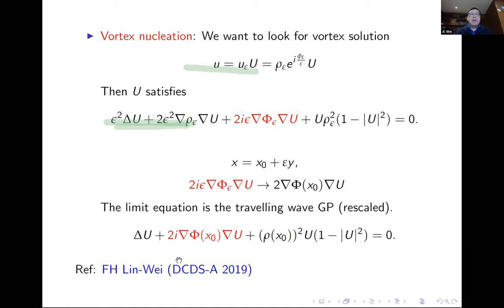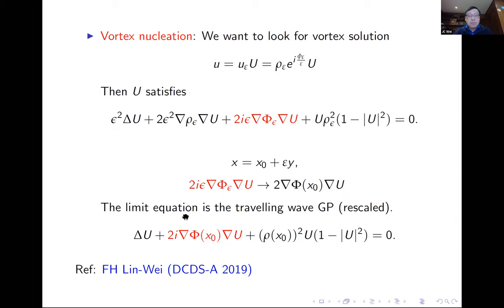If we're looking for vortex solutions — which has been observed in the physics literature, where vortices are found to emanate from the boundary — what we find is called vortex nucleation. The bifurcation equation turns out to be a sort of traveling wave for GP, and under some non-degeneracy condition for this traveling wave, we can also construct vortex solutions. This is another motivation to study the traveling wave solution for GP.